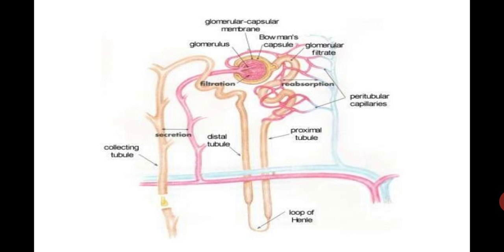This represents the filtration process. When nephrons are not working — in the case of renal damage or renal failure — this process is disrupted. If the kidney and its nephrons are working normally, filtration occurs at an efficient rate.